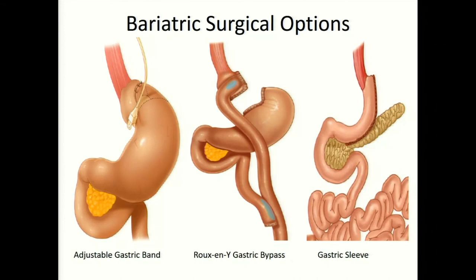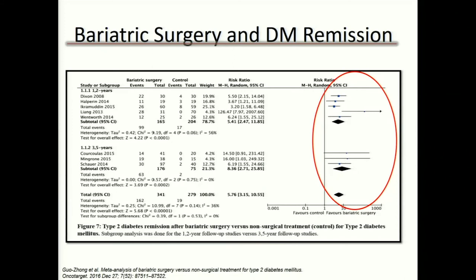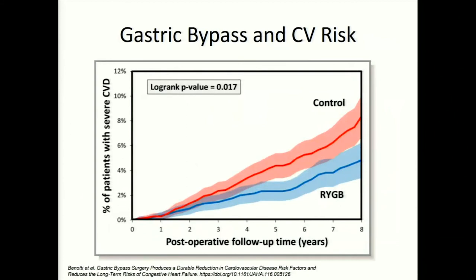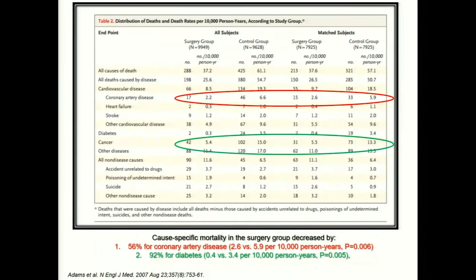I'd be remiss not to mention bariatric surgery. All types of bariatric surgery decrease or lower the incidence of diabetes in the future. Gastric bypass — the Roux-en-Y — lowers cardiovascular risk as well: the surgical group has significantly lower rates of developing severe cardiovascular disease later on, with a 56 percent reduction in CAD and 92 percent reduction for diabetes. Bariatric surgery meets all three circles of the unholy trinity — weight, cardiovascular disease, and glycemic control.